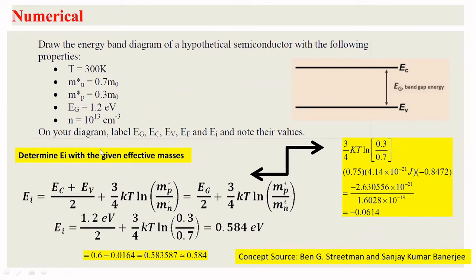The first problem is: draw the energy band diagram of a hypothetical semiconductor with the following properties. T equals 300 Kelvin, effective mass of the electron is 0.7 M0 (free mass of the electron), effective mass of the holes is 0.3 M0, band gap EG is 1.2 eV. It is a hypothetical semiconductor, not specified. The electron concentration is 10 to the power of 30 per cubic centimeter.